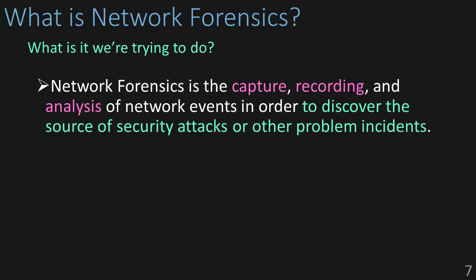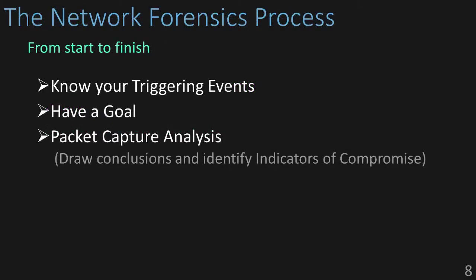Now, the network forensic process — where do we start, and what does it look like? Typically, when you're presented with a capture file for analysis, that means something happened. Before you get started, you need to know what that something was — your triggering event. Once you have that, you design a series of focused goals to help direct your investigation into achievable results. Finally, after identifying the triggering event and setting your goals, you can begin with the packet capture analysis itself. At the end of this process, you will have identified the things you were looking for, allowing you to draw conclusions and take appropriate actions.